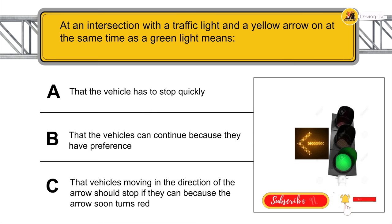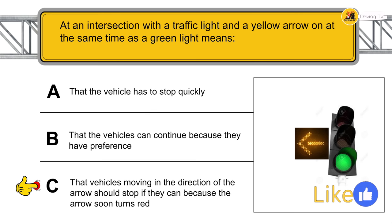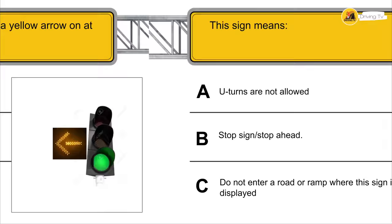A yellow arrow appearing at the same time as a green light means that vehicles moving in the direction of the arrow should stop if they can, because the arrow will soon turn red.